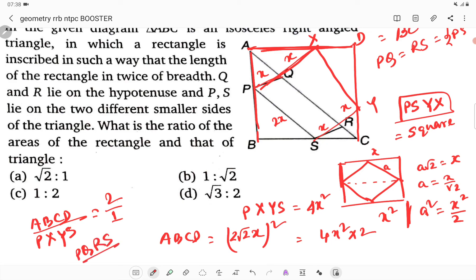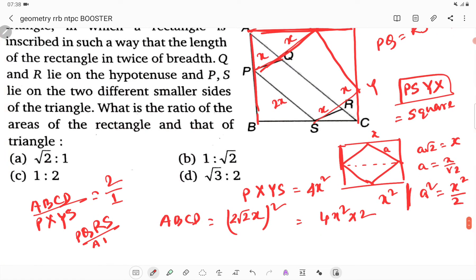ABC divided by the rectangle area, what does that become? It's the same, 1 is to 2.